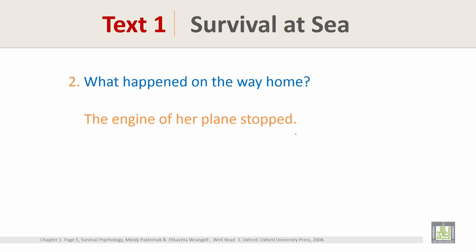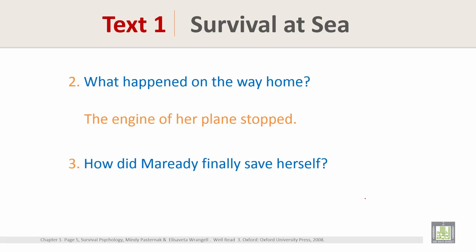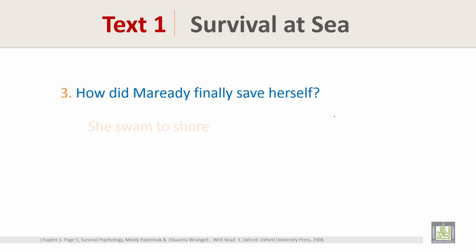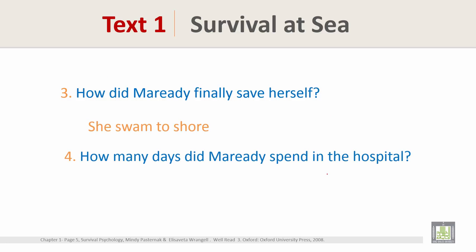Now Question 3: How did Meredith finally save herself? To answer this question, read the first sentence in paragraph number 5. Meredith started swimming west, using the stars to guide her towards shore. So the answer to Question 3 is: she swam to shore.